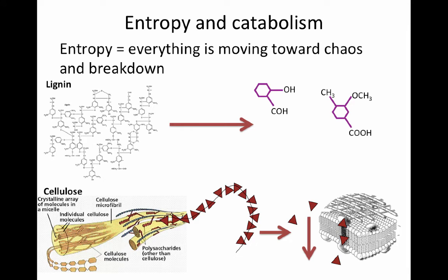I want to say a word about entropy and catabolism. The law of entropy is that everything is moving toward chaos and breakdown — molecules are always randomly shifting and moving toward chaos or restructure. Two examples I think about a lot as a soil ecologist are lignin and cellulose breakdown. Lignin is a very complicated molecule and cellulose is a very regular molecule of beta-linked glucose units built together in a long stream.